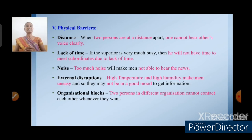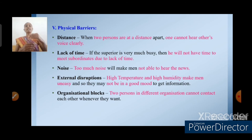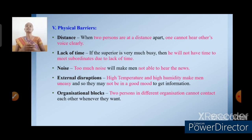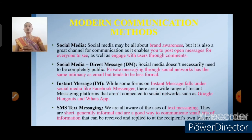Next, physical barriers. Distance — if two persons are far apart, communication does not reach clearly, and the voice is not clear, so persons cannot receive information correctly. Lack of time — if the superior is very busy, he will not have time to meet his subordinates. Noise — too much noise also affects communication, making it impossible to hear views or ideas. External disruptions — high temperatures and high humidity; weather conditions also affect communication. Organizational blocks — two persons in different organizations cannot contact each other whenever they want. These are the physical barriers and barriers of communications.